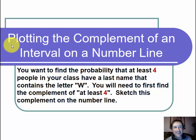This is a video on plotting the complement of an interval on a number line. The question states, you want to find the probability that at least four people in your class have a last name that contains the letter W. You will need to first find the complement of at least four. Sketch this complement on the number line.